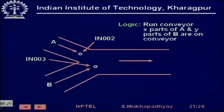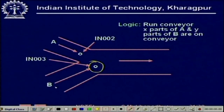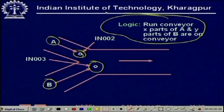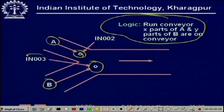Here is a simple example. You have a conveyor into which parts are supplied — parts of type B and parts of type A are coming. You want to implement the logic: run the conveyor when at least x parts of A and y parts of B are on the conveyor. The arrival of parts is detected by two sensors. This is an example of using counters.